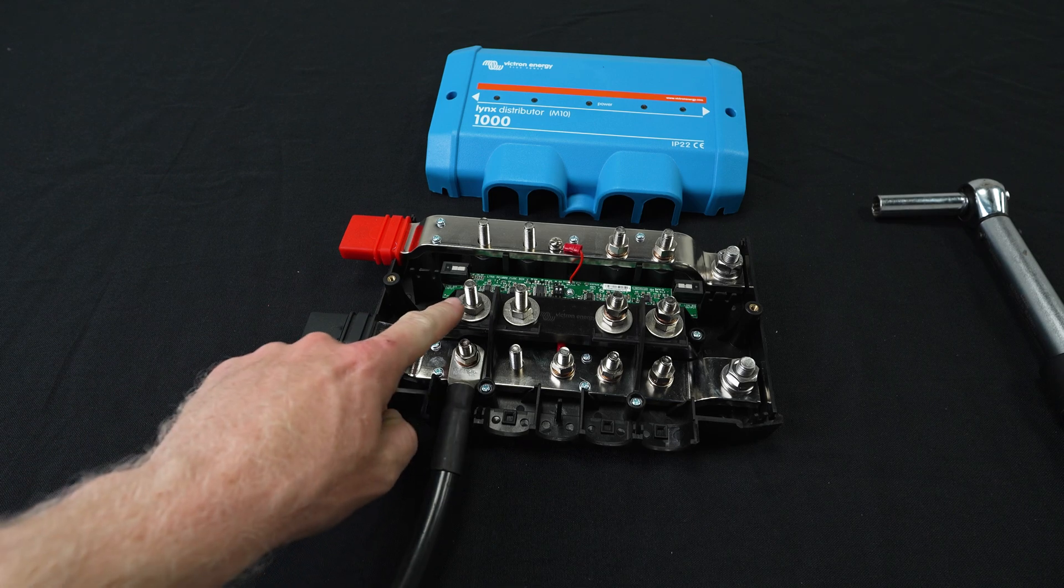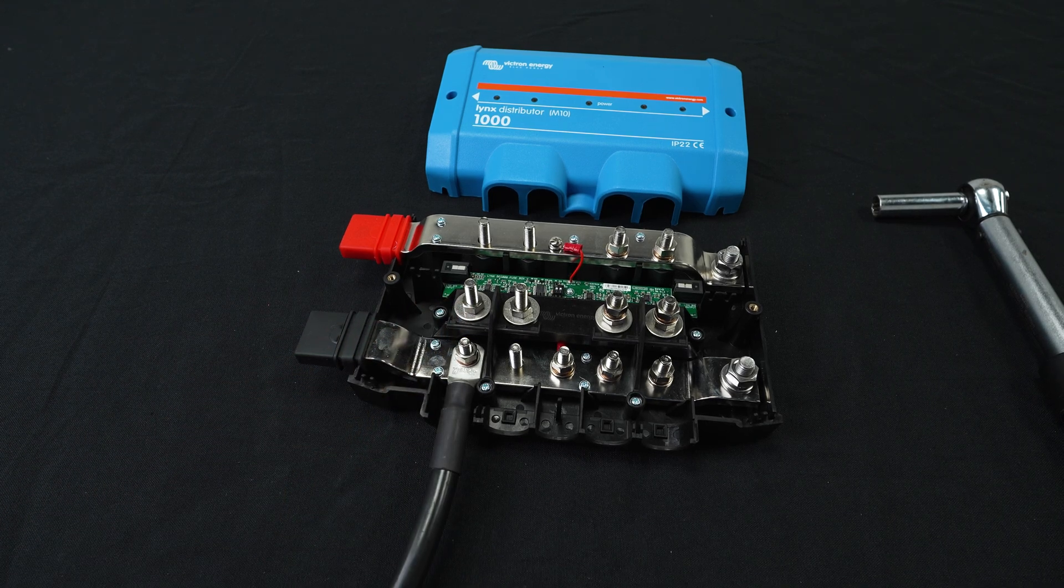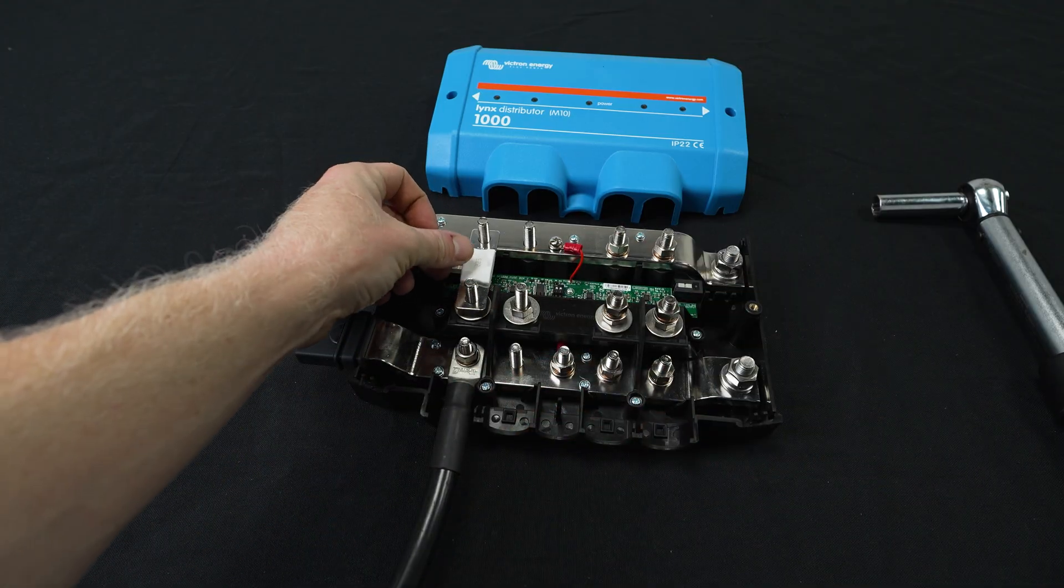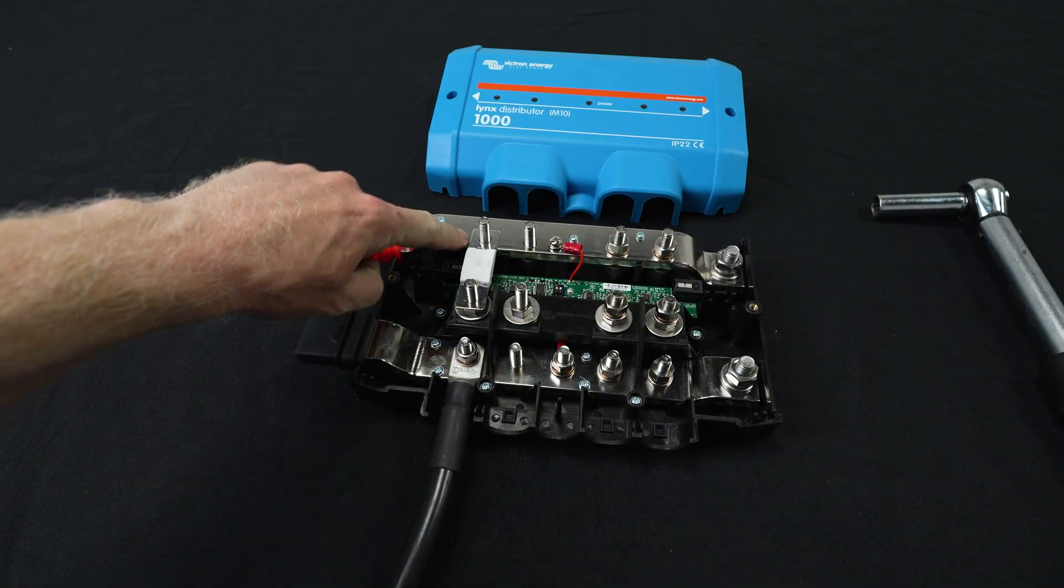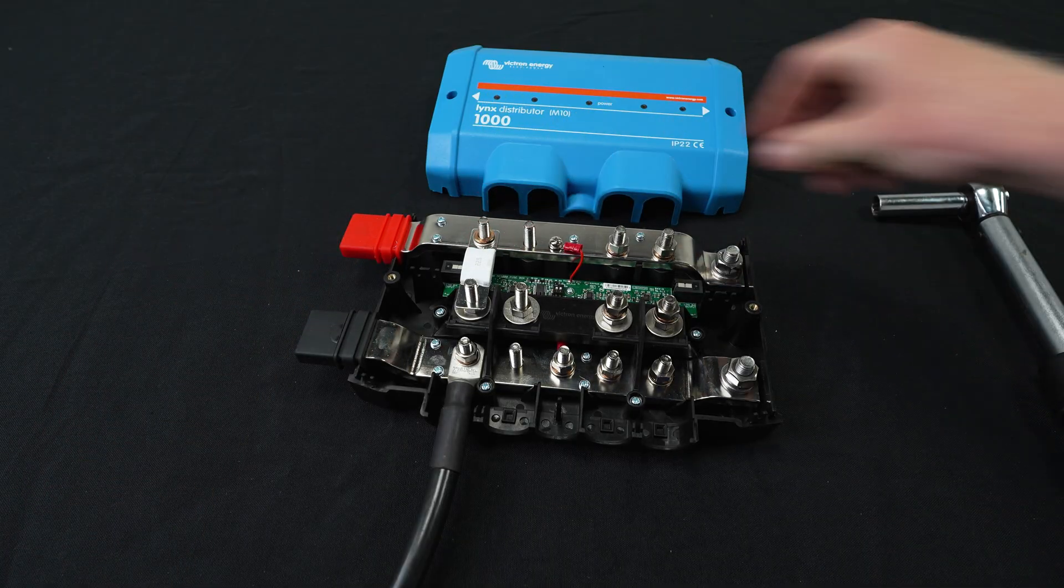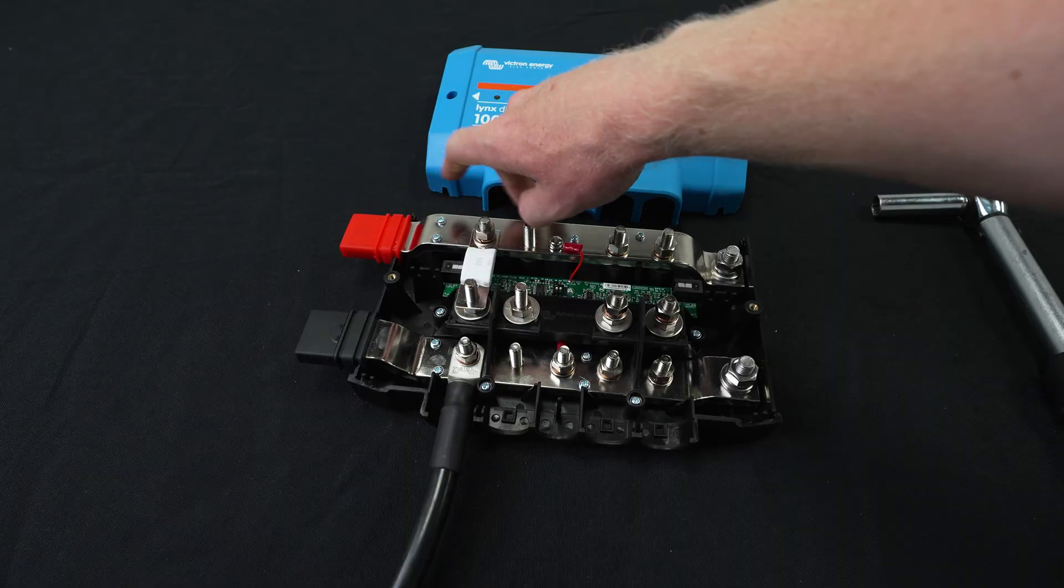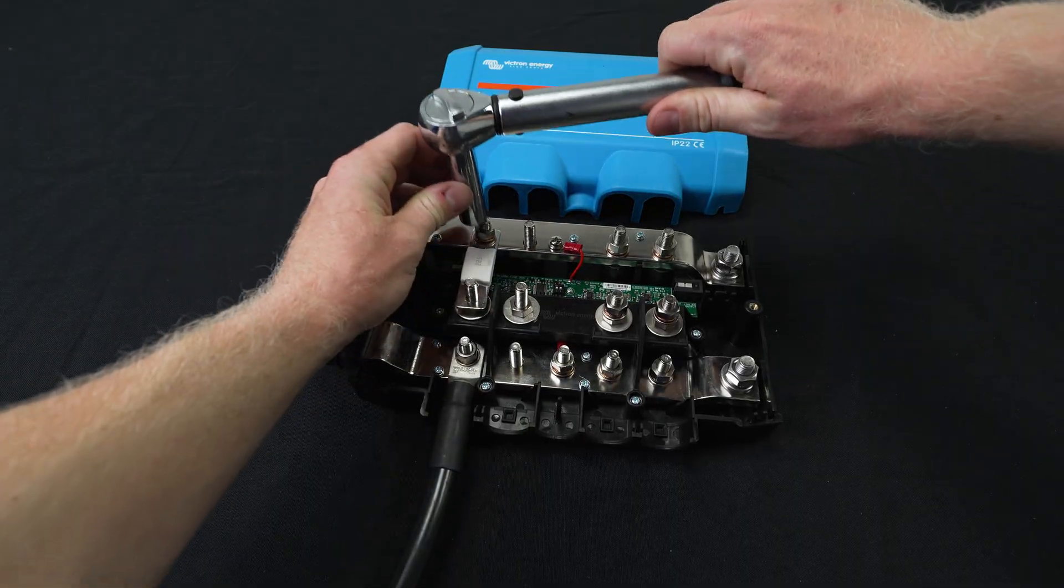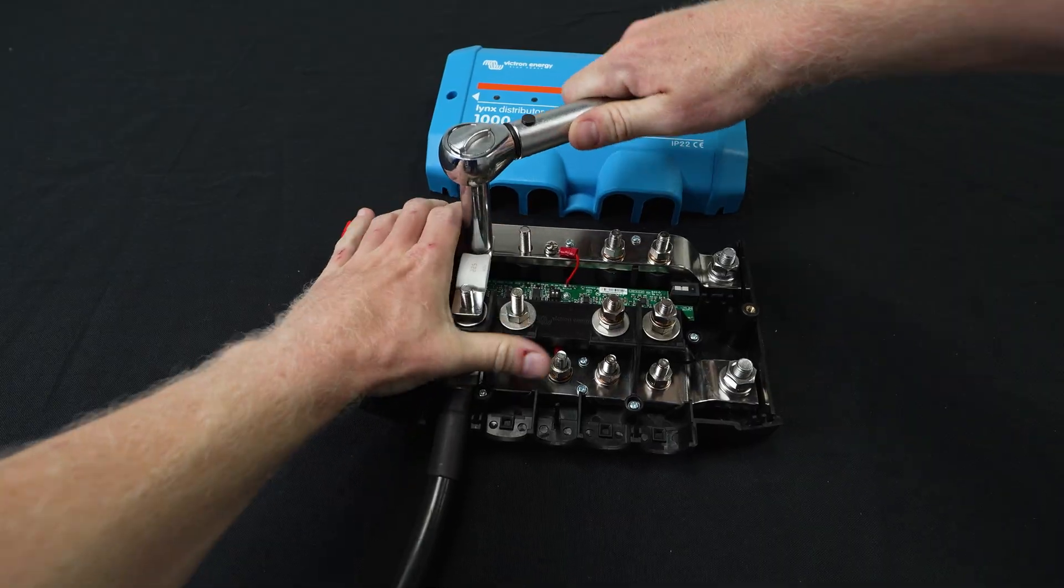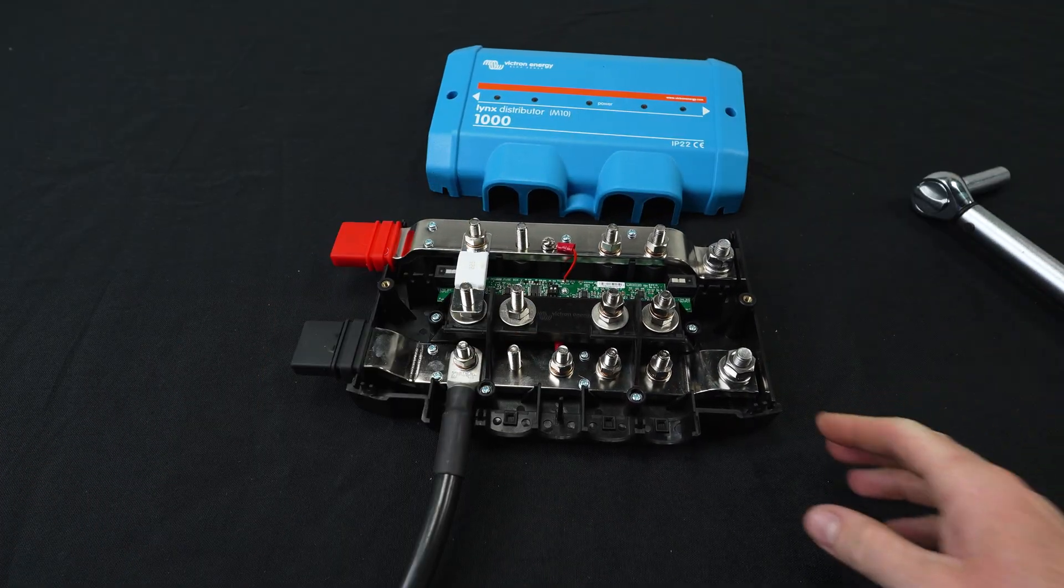Now we can land our fuse here first. So for this 2 AWG cable, I'm going to be using a 225 amp fuse. Again landing the fuse directly on the bus bar, then the flat washer, the lock washer, and finally the nut. We're again at 14 newton meters. And we're tight.